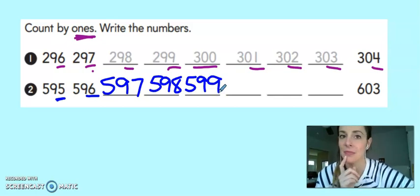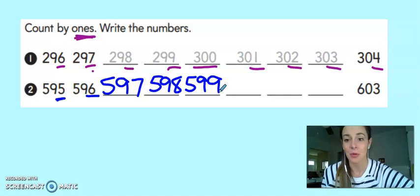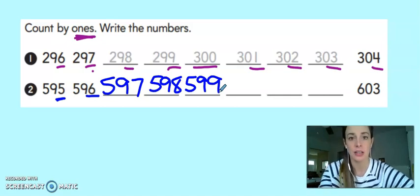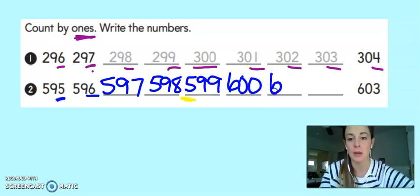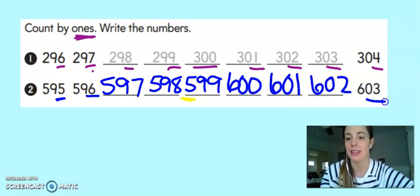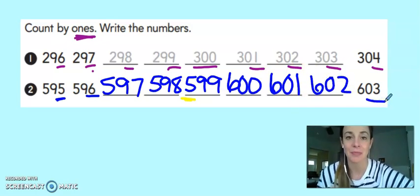I'm at that 99 again, so I know the next number will be the new 100. I had five hundreds, so my next hundred will be 600. Then I'm going to keep going. 601, 602, and then last was 603.